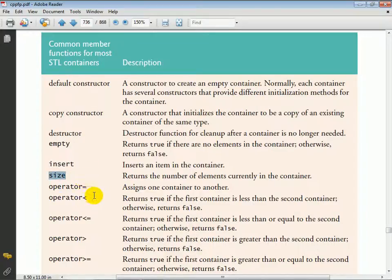You see here the various relational operators: less than, less than or equal to, greater than, and greater than or equal to, that can compare the entire contents of a container against another container of the same type to see if the first container is less than, less than or equal to, greater than, or greater than or equal to the other.